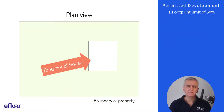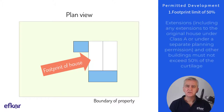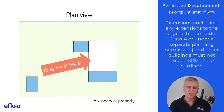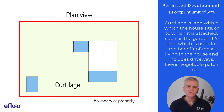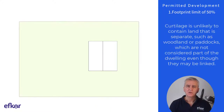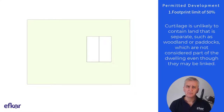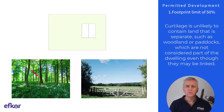Condition one: footprint limit of 50%. Extensions, including any extensions to the original house under class A or under a separate planning permission, and other buildings must not exceed 50% of the curtilage. Curtilage is land within which the house sits, or to which it is attached, such as the garden. It's land used for the benefit of those living in the house, and includes driveways, lawns, vegetable patch, etc. Curtilage is unlikely to contain land that is separate, such as woodland or paddocks, which are not considered part of the dwelling, even though they may be linked.